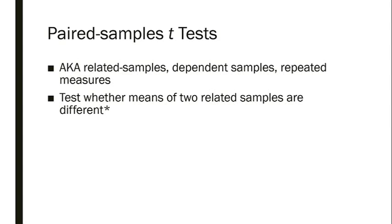You have related samples very often when the same subjects or participants generated data for both samples. For example, an easy condition and a difficult condition where the same participants participate in the easy condition and then also in the difficult condition. You can also have paired samples t-tests if you have subjects or participants who form dyads — for example, getting estimates of a child's behavior from a mother and a father, or from a caregiver and a teacher.